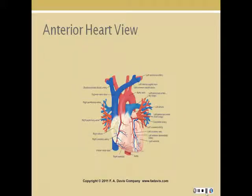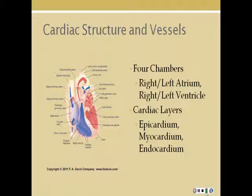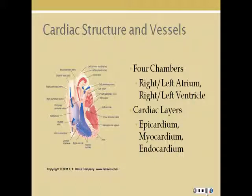This is an anterior view of the heart and all of the major blood vessels. For cardiac structure: there are four chambers — the right and left atria, which are separated by the interatrial septum and have thinner walls, and the right and left ventricles, which are thicker-walled and separated by the interventricular septum.